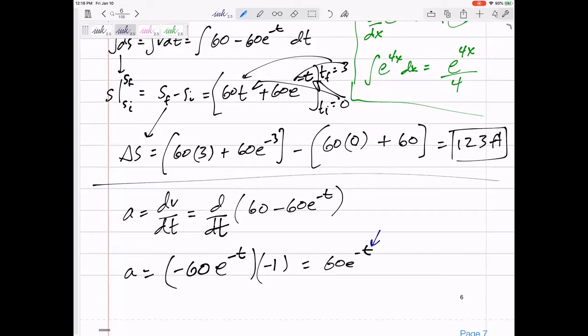And let me answer the question. When t equals three, acceleration is 2.99 feet per second squared.